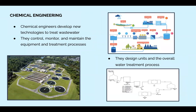Chemical engineers also play an important role in providing access to clean water. They are needed to design and develop chemical and physical unit operations and the overall processes needed to purify water. This water purification could involve removing natural contaminants like bacteria or treating and recycling wastewater. They control, monitor, and maintain the equipment and treatment processes at wastewater treatment plants from industries. On this slide, there is also an example of a water treatment flow chart, and these flow charts are also part of the chemical engineer's role.